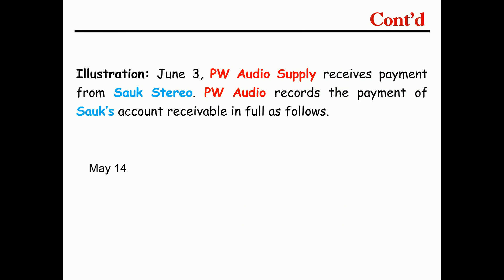On June 3, PW received payment. If the discount period was still valid, the customer is able to pay and receive the discount, so you record cash debit and accounts receivable credit. This covers both periodic purchase activity and sale activity, as well as perpetual purchase and sale activities.